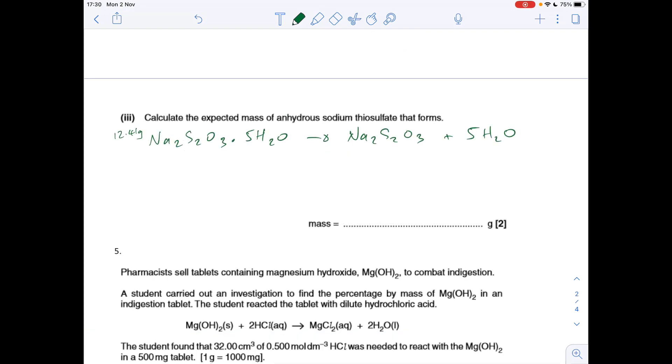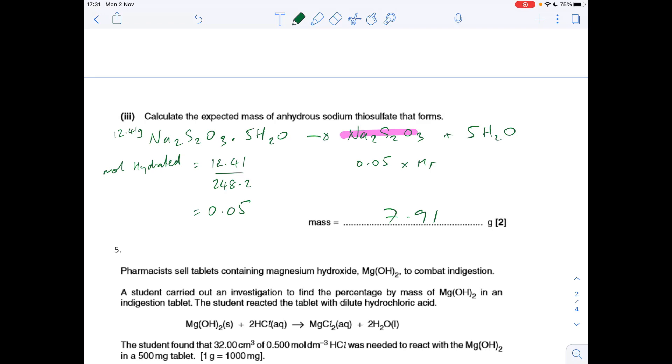And the calculation now: we've got 12.41 grams of the hydrated sodium thiosulfate. It's been heated to remove all the water. We've got to work out the expected mass of anhydrous sodium thiosulfate that forms. The first thing I'm going to do is work out the moles of the hydrated salt: that's mass over MR, 12.41 grams divided by 248.2, and that comes out at 0.05 moles. We would expect to get 0.05 moles of the anhydrous salt. All we need to do now is multiply that by the MR, and we'll get the mass. That comes out at 7.91 grams.